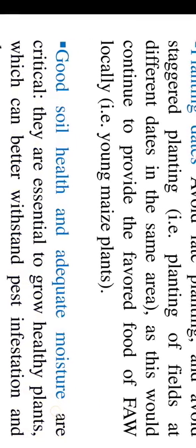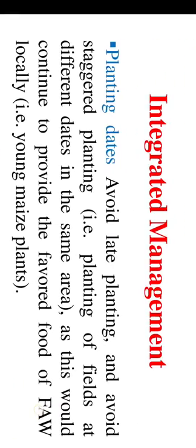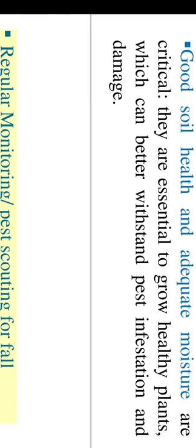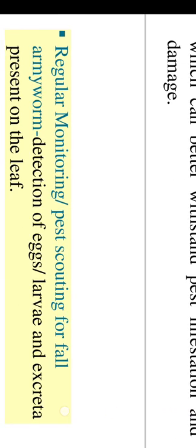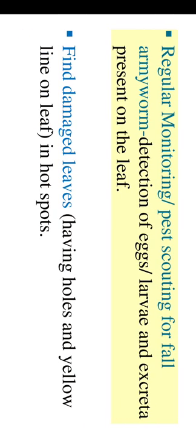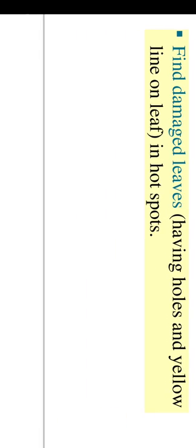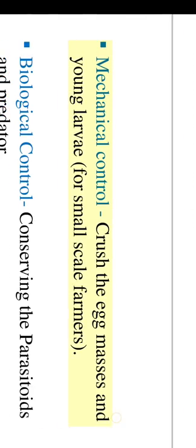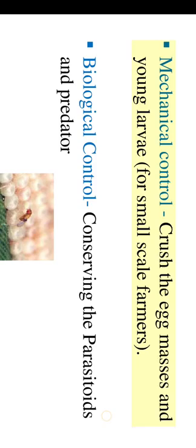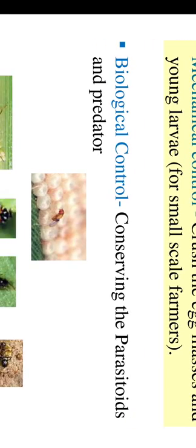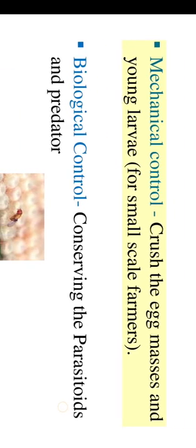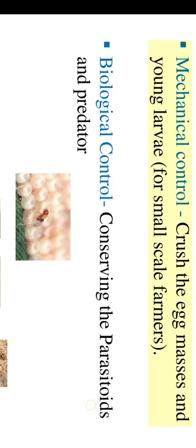Regular monitoring and pest scouting for fall armyworm: detection of eggs, larvae and excreta present on the leaf. Find damaged leaves having holes and yellow lines on leaves in hot spots. Mechanical control: crush egg masses and young larvae — suitable for small-scale farmers.